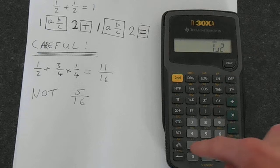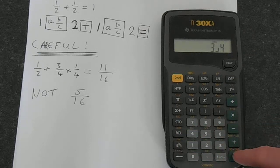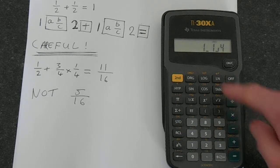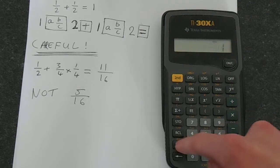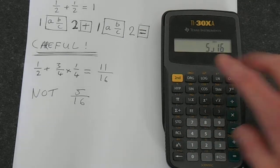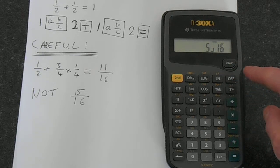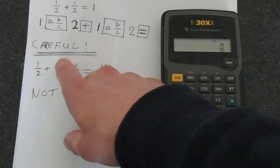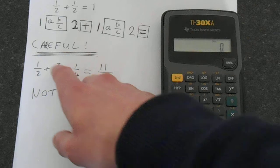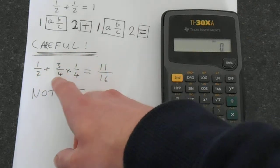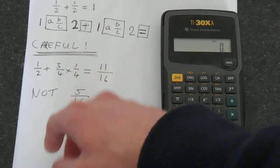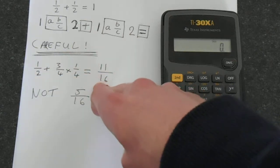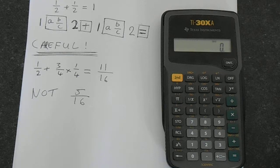For example, if you did 1 half plus 3 over 4 equals, you get 1 and 1 quarter. And then if you times this by 1 quarter, you get 5 over 16. That is wrong. So really you have brackets around here. So by pressing equals after this first one, it's effectively putting brackets around this, which you don't want. So you can just rely on the calculator to keep your BODMAS right for you.